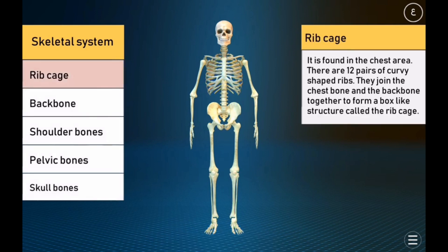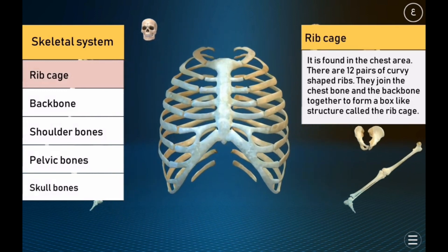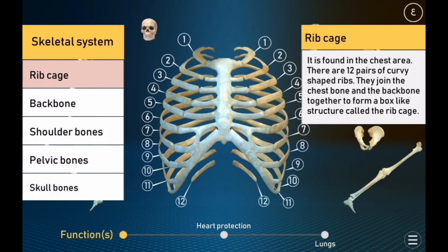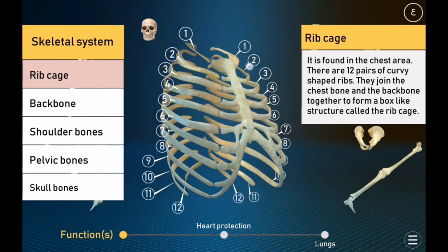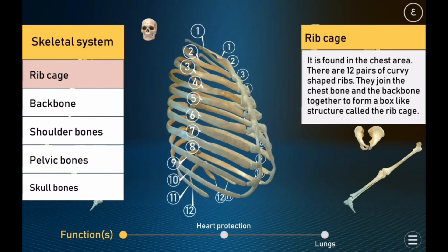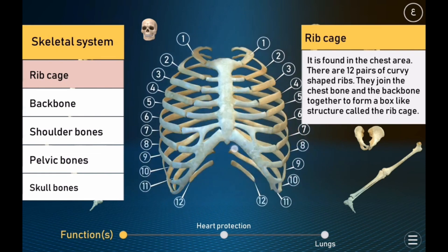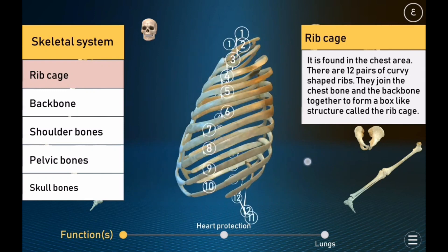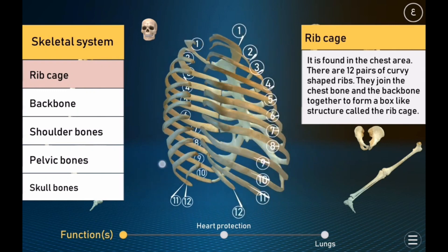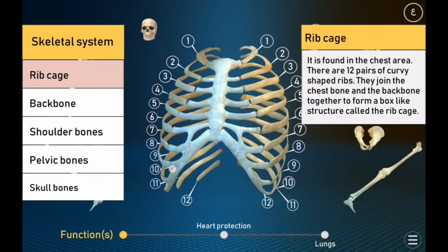Rib cage. It is found in the chest area. There are 12 pairs of curvy-shaped ribs. They join the chest bone and the backbone together to form a box-like structure called the rib cage.